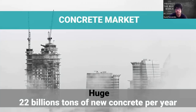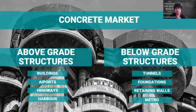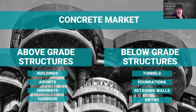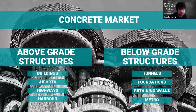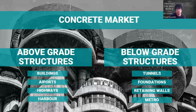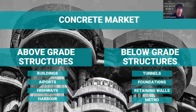We have the concrete market in civil infrastructure, which is a very big or huge market. Every year, around 20 billion tons of new concrete are built, so you can imagine how big this market is worldwide. I like to separate civil structures into two different parts, because our device has two different features. So that's why it's important to differentiate.